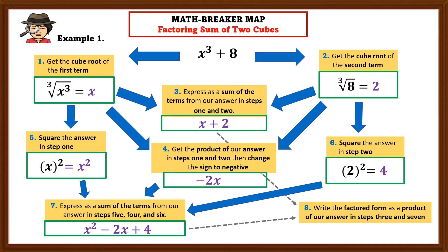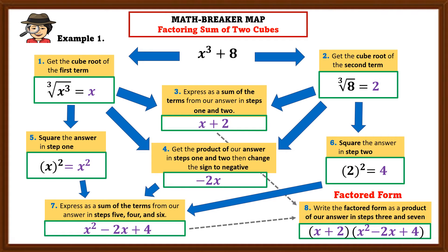The last step is to write the factored form as a product of our answers in steps 3 and 7: that is (x + 2)(x² − 2x + 4). To check if the factored form is correct, multiply (x + 2)(x² − 2x + 4). The product should equal the given sum of two cubes, x³ + 8. Therefore our factored form is correct.